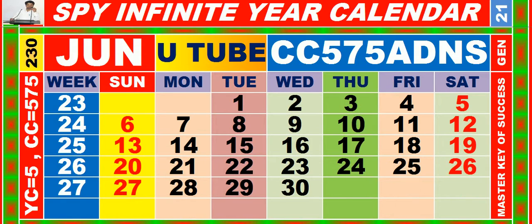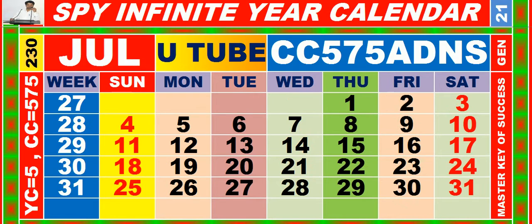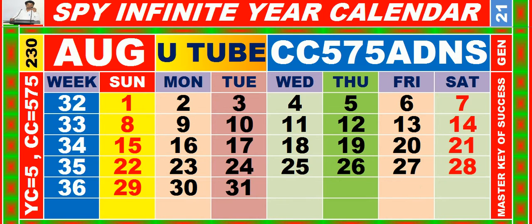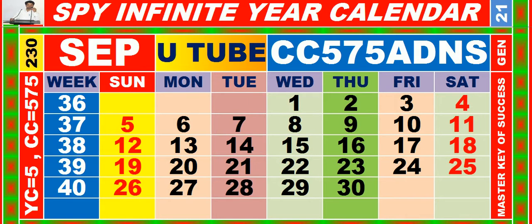Calendar for the month of June having calendar code equal to 5,7,5. Calendar for the month of July having calendar code equal to 5,7,5. Calendar for the month of August having calendar code equal to 5-7-5. Calendar for the month of September having calendar code equal to 5-7-5.